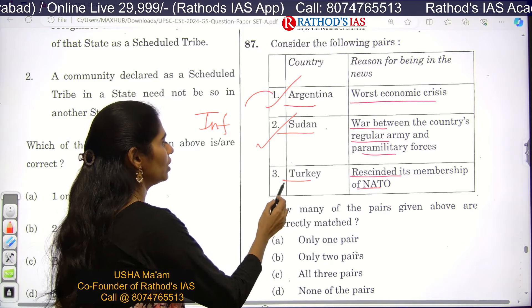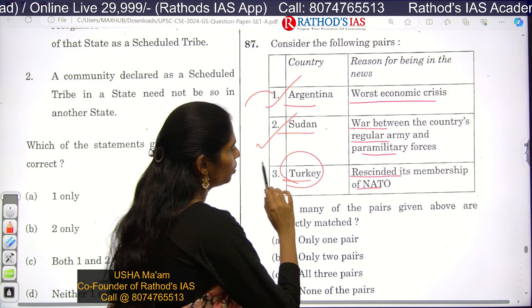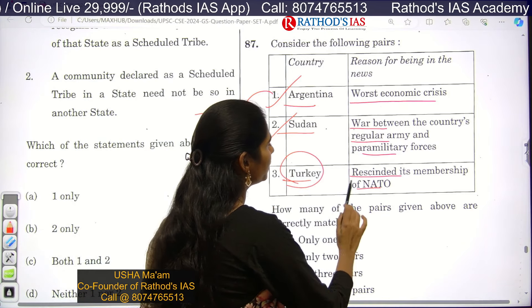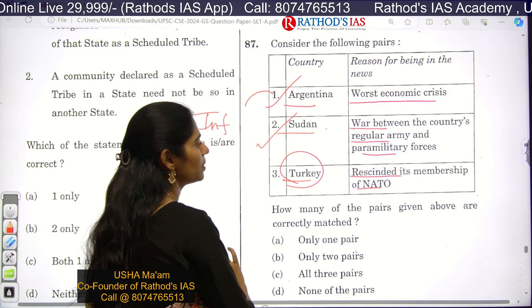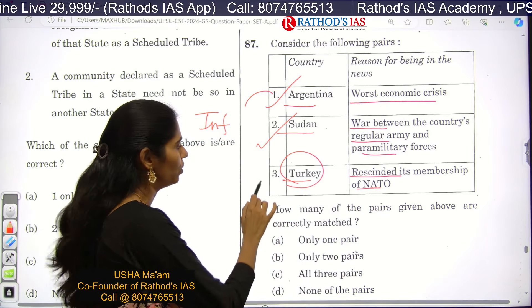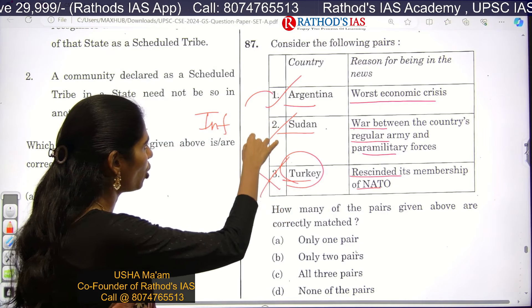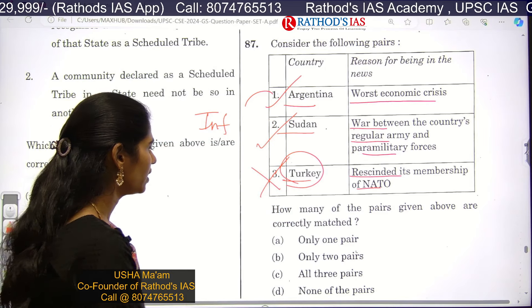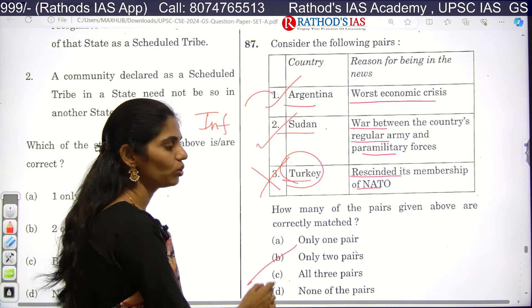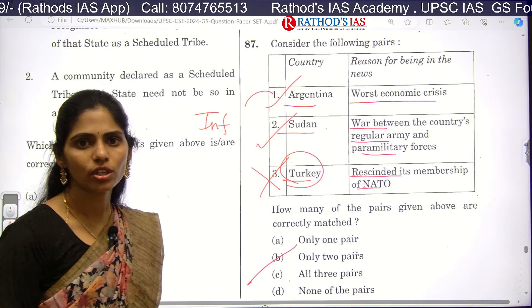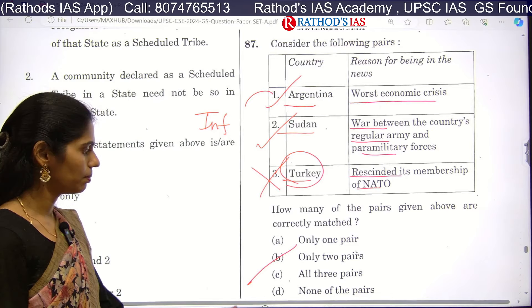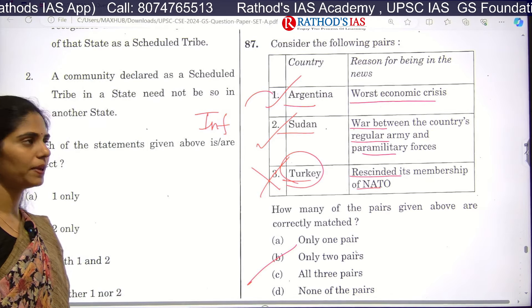The third country is Turkey — paired with having re-exited its membership of NATO. This is incorrect because no country has re-exited NATO membership. So only two pairs are correct, making option B the correct answer.